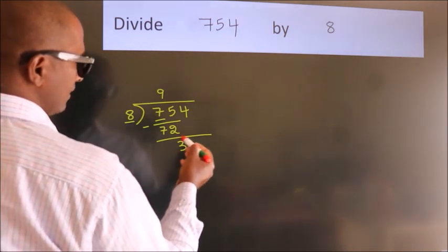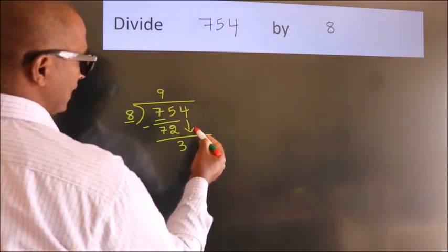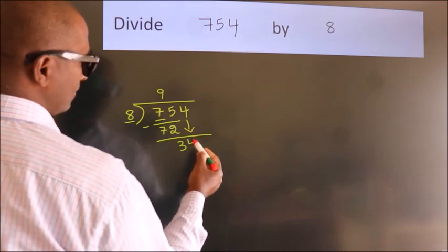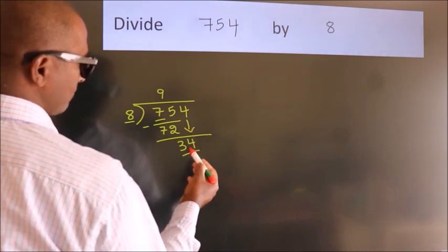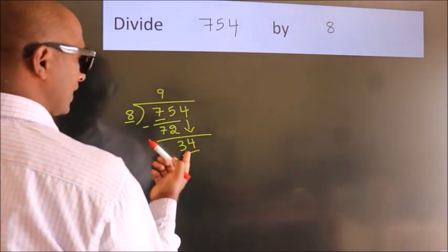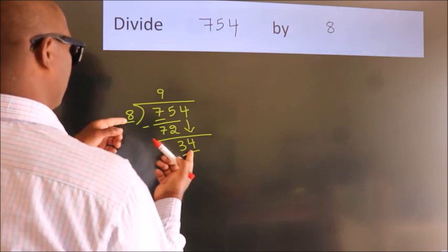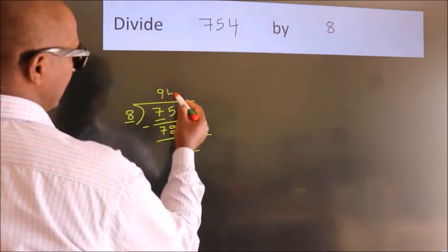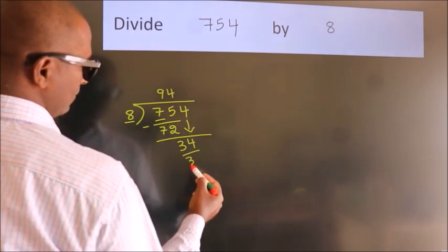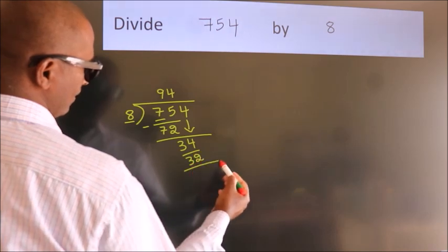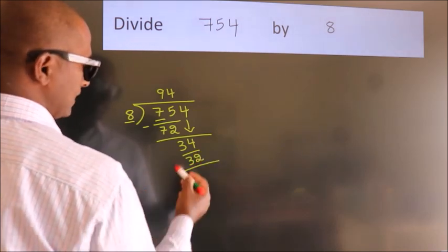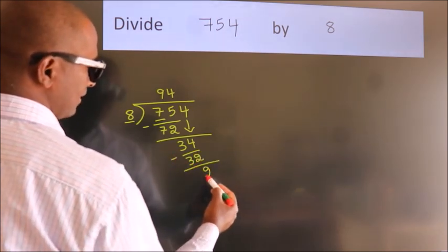After this, bring down the beside number. So, 4 down. So, 34. A number close to 34 in 8 table is 8 fourths 32. Now, we subtract. We get 2.